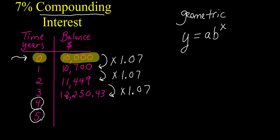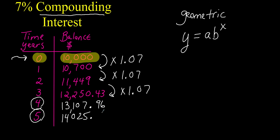Hopefully you took twelve thousand two hundred fifty dollars and forty-three cents and multiplied by one point oh seven to get thirteen thousand one hundred seven dollars and ninety-six cents. Then you took that number times one point oh seven again and got fourteen thousand twenty-five dollars and fifty-one or fifty-two cents — I'm just rounding, and I only went to two decimal places because we're dealing with money.